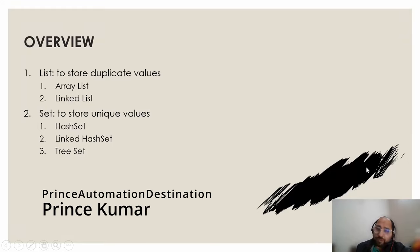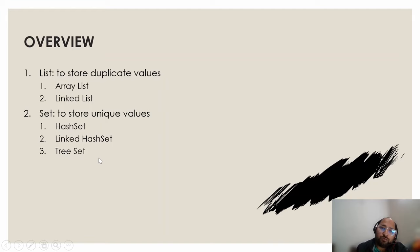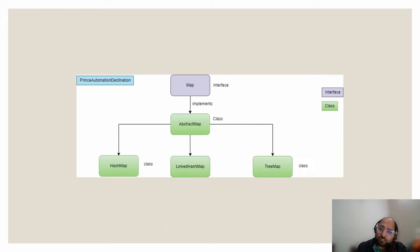Hello everyone, welcome back to my channel Prince Automation Destination. In our last lecture of the collection series, we discussed list and set interfaces — list for duplicate values using ArrayList or LinkedList, and set for unique values using HashSet, LinkedHashSet, and TreeSet. Please go back to my previous videos to gain some good understanding around this, as it will help you understand the current lecture.